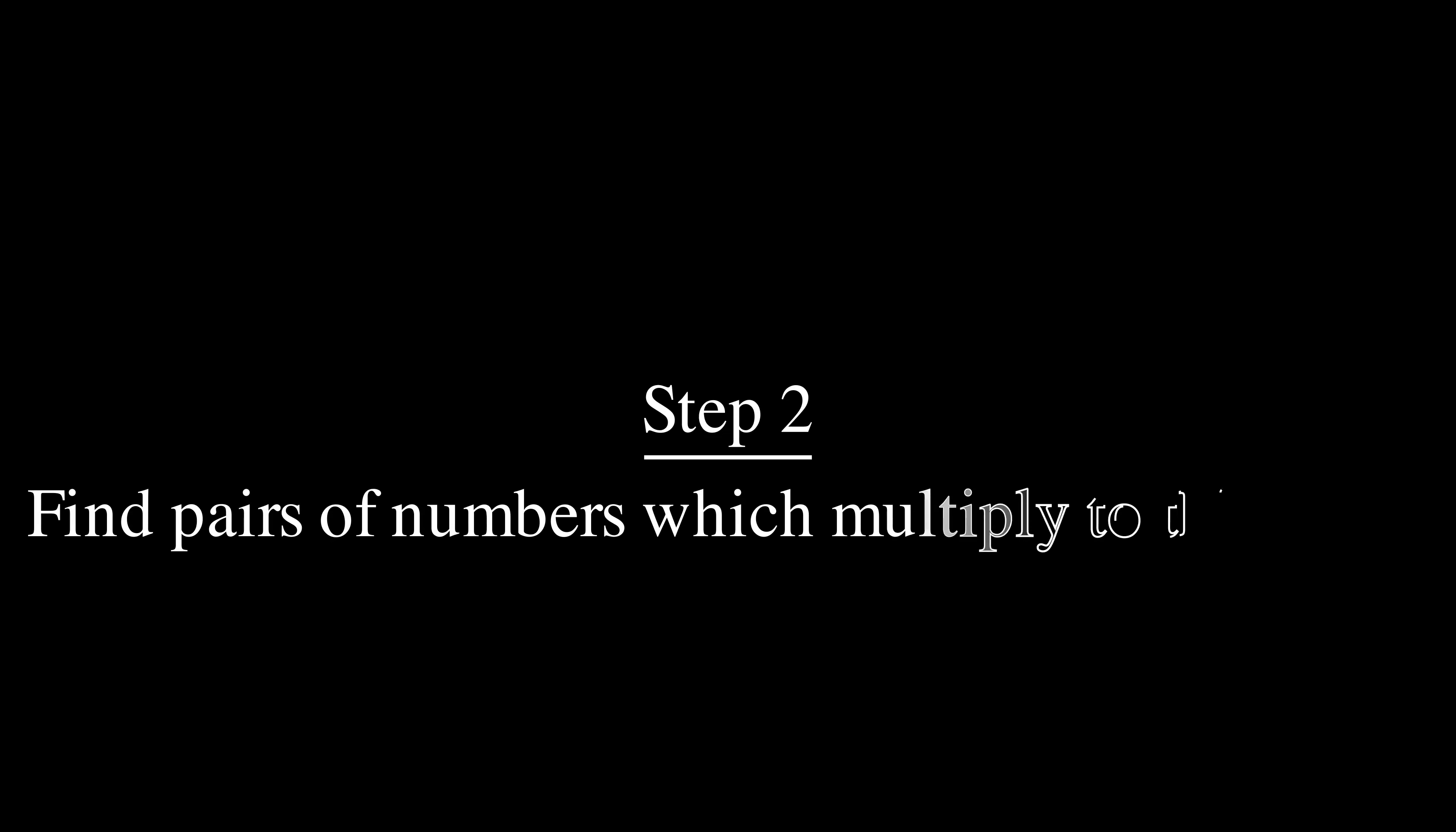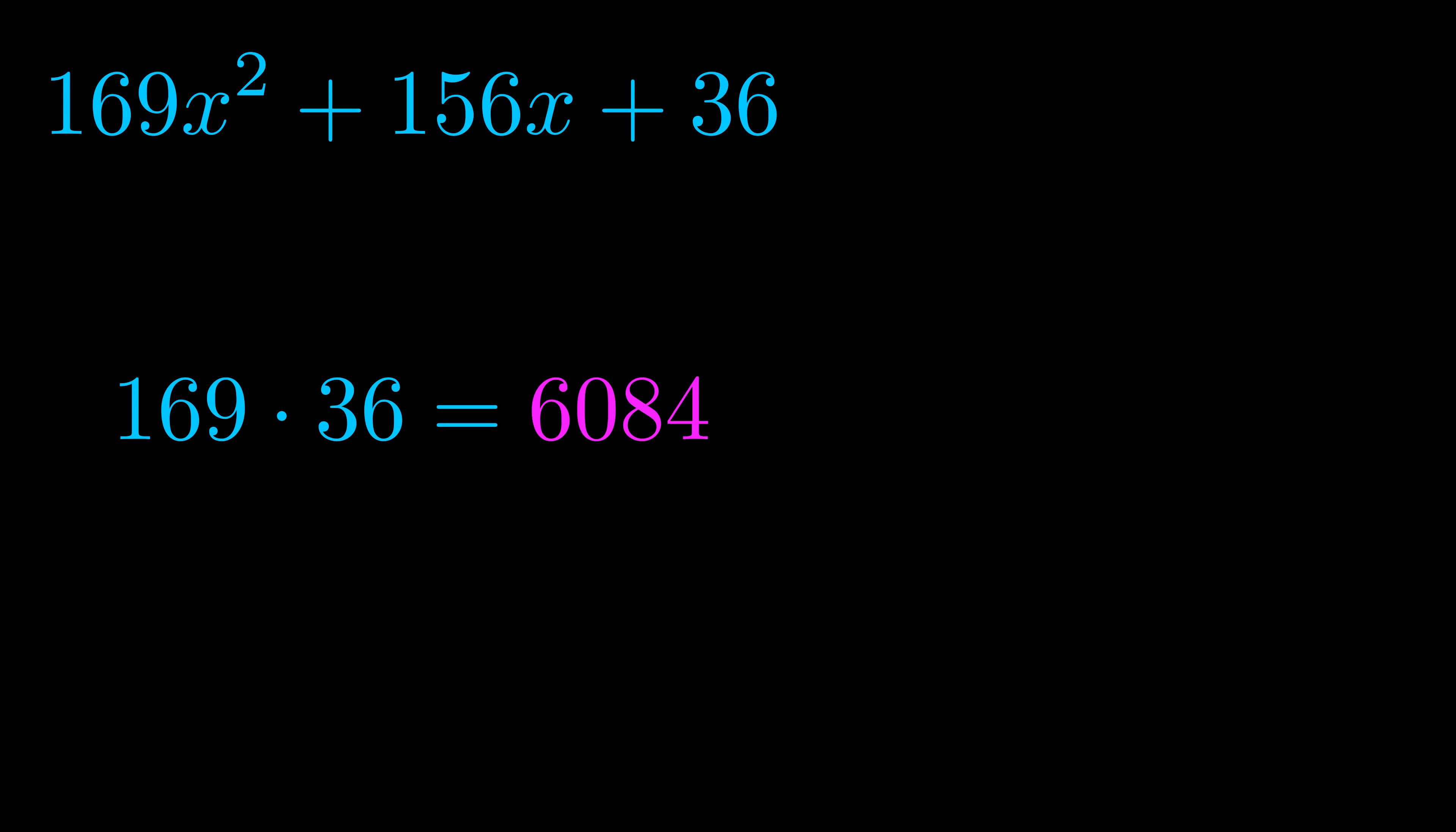Step two is to try to find all of the pairs which multiply to this number. Now it turns out you don't really need to find all of them but go ahead and write down as many numbers as you can that multiply to the magenta value for now. Pause the video and resume when you're ready to continue.